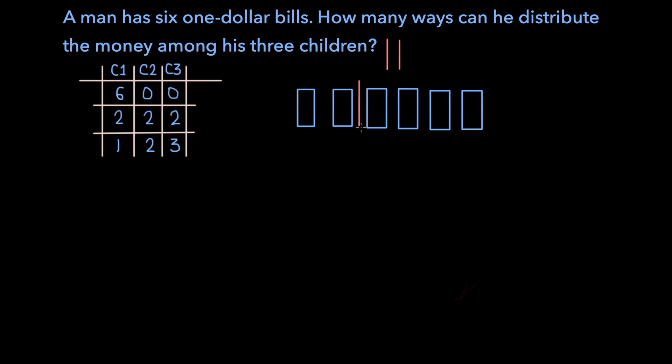We can place the dividers here and here for example, and let's say that our diagram represents that the first child gets the money to the left of the first divider, the second child gets the money between the first and second dividers, and the third child gets the money to the right of the second divider.